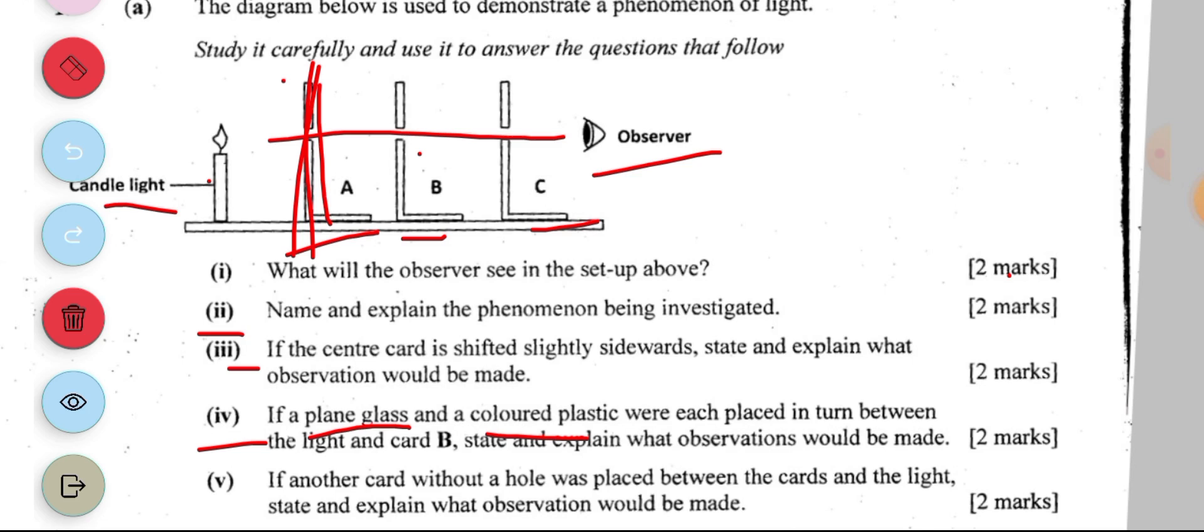If another card without a hole was placed between the cards and the light instead, state and explain what observation would be made. The card is opaque, therefore blocks the path of light. When you are asked practical questions, you have to be very brief and make sure you include keywords.